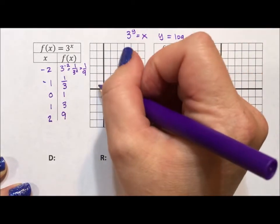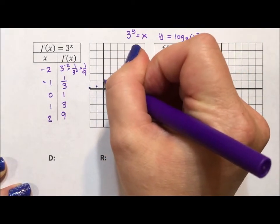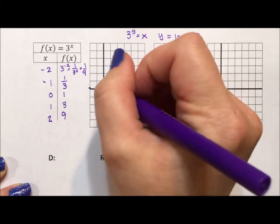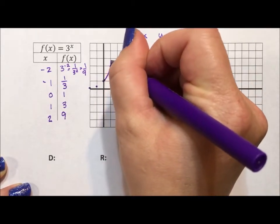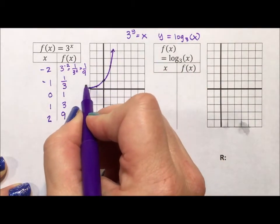Okay, so then I graph this. Negative 2, 1 ninth. Negative 1, 1 third. 0, 1. 1, 3. And 2, 9 is off the graph, but that's okay because I'm really just needing to get the smooth exponential curve with arrows.